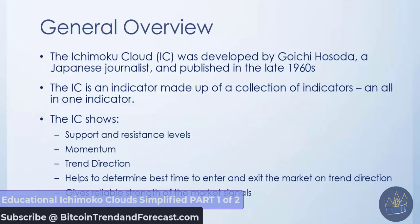For the general overview: the Itchy Moco Cloud was developed by Gucci Hussada, a Japanese journalist, and was published in the late 1960s. The Itchy Moco Cloud is an indicator made up of a collection of indicators — it's basically considered an all-in-one indicator, and it works really well with long-term trading. It is used for support and resistance levels, as a momentum indicator, to show trend direction, to help determine the best time to enter and exit the market, and it gives a very reliable strength-of-market signal.